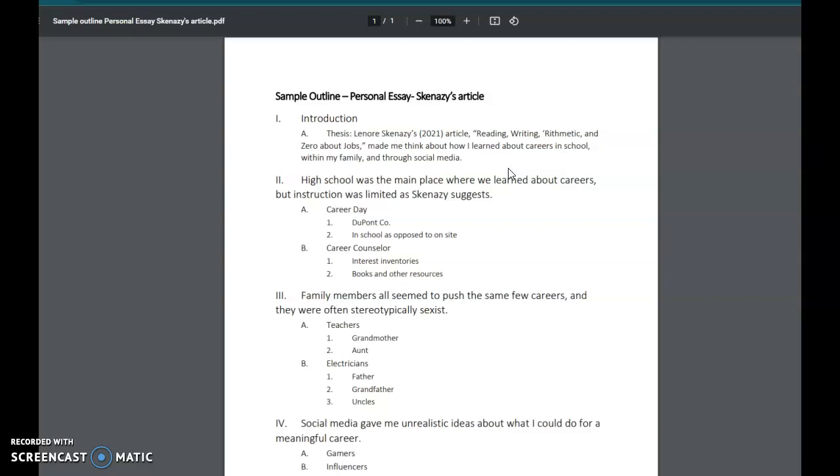Lenore Skenazy's 2021 article 'Reading, Writing, Arithmetic, and Zero About Jobs' made me think about how I learned about careers in school, within my family, and through social media. In this case what this person has done is they have included the article title, the article author, the year it was written, and you can see they use personal pronouns like I and me. They've broken down the categories they're going to talk about.